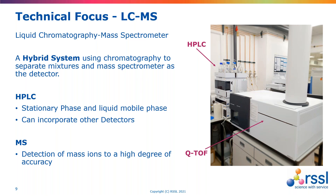The HPLC uses traditionally a reverse phase system where we have the stationary phase on the column and a variety of mobile phase systems that allow us to separate out the mixture and hopefully the impurity on the HPLC column. The advantage of an HPLC is that we are able to incorporate alternative detectors alongside the mass spectrometer — traditionally a UV detector. The mass spec then allows us to detect mass ions to a much higher degree of accuracy, allowing us to investigate that impurity.